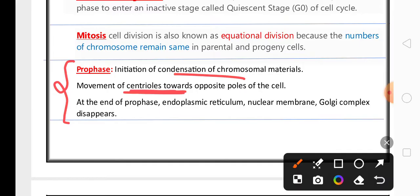The characteristics of prophase are very important for two marks. Here chromosomes condense. Centrioles move to the opposite poles of the cell. Endoplasmic reticulum, nuclear membrane, Golgi complex, and nucleolus start disappearing.